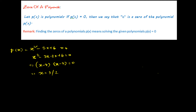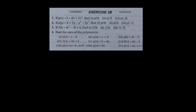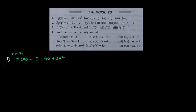Let's see the first exercise. This is exercise 2B from RS Aggarwal. The first question asks: given the polynomial p(x) equals 5 minus 4x plus 2x squared, find p(0), p(3), and p(-2).